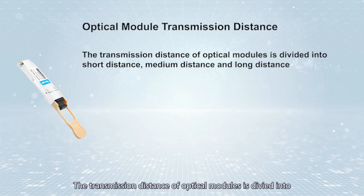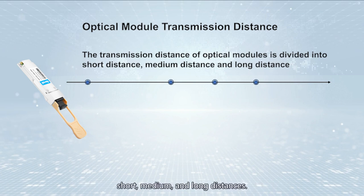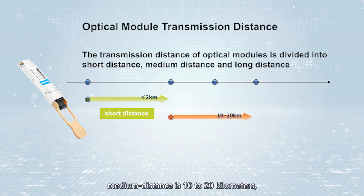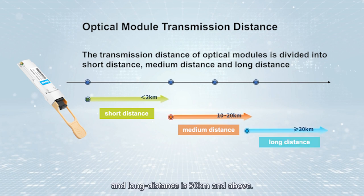The transmission distance of optical modules is divided into short, medium, and long distances. Short-range transmission typically refers to distances below 2 kilometers, medium distance is 10 to 20 kilometers, and long distance is 30 km and above.